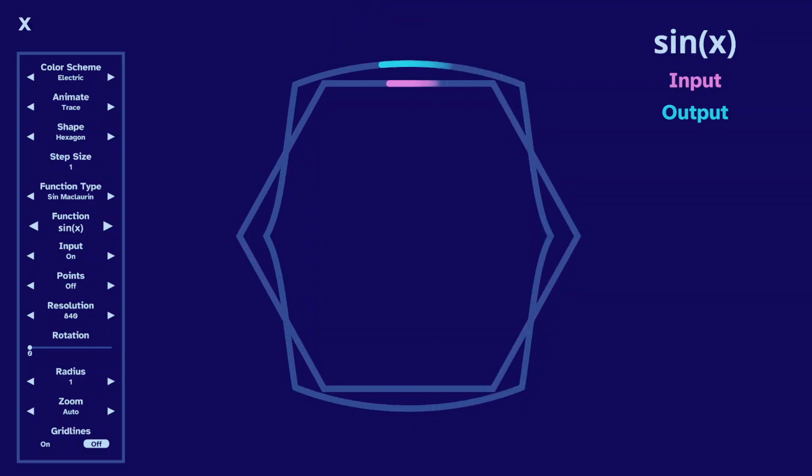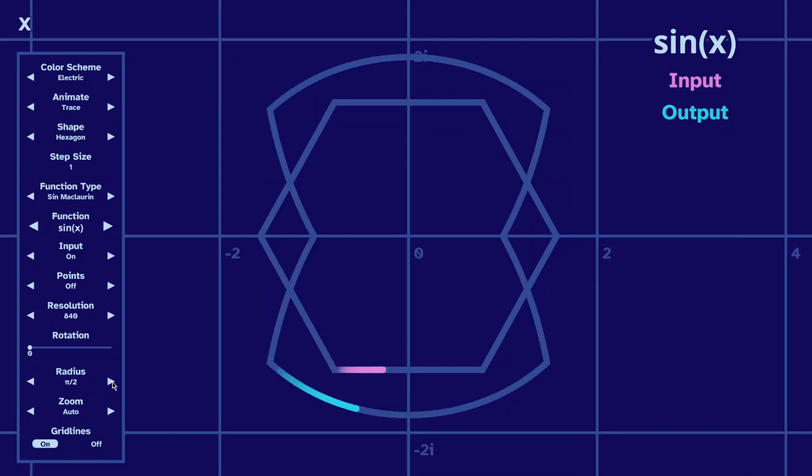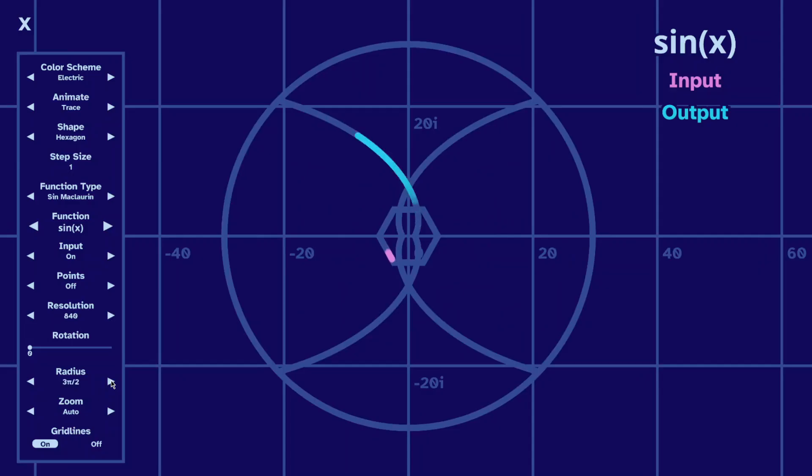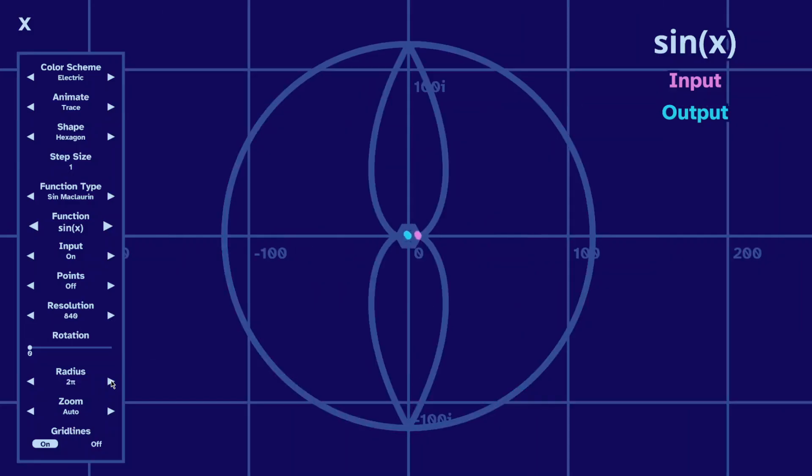The input and output closely follow each other. But that's just because our radius is 1. With radius pi over 2, they're further apart. And with radius pi, this circle appears. And it remains if we go to 3 pi over 2, or 2 pi.